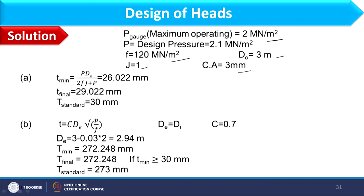Adding the corrosion allowance gives a thickness of 29.022 mm. Since part A requires the nearest integer, we take 30 mm as the next integer value. This is the same method for shell thickness already demonstrated in lecture 5 of week 1.